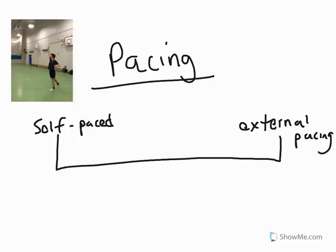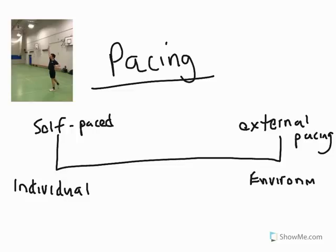Our fourth continuum is the pacing continuum, where we look at either self-paced or externally paced skills. Here we're interested in what controls the timing of the movement. In self-paced skills, the timing is controlled by the individual. For externally paced skills, the timing is dictated by the environment. The badminton shot is really an externally paced skill because the performer — Will — is responding to the environmental conditions they find themselves in. We might also say that an externally paced skill tends to be an open skill.